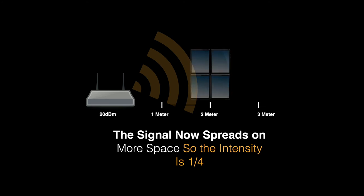So the signal now spreads on much more space and the intensity is 4 times less than the intensity 1 meter away.